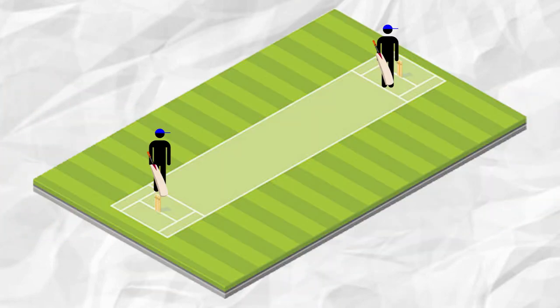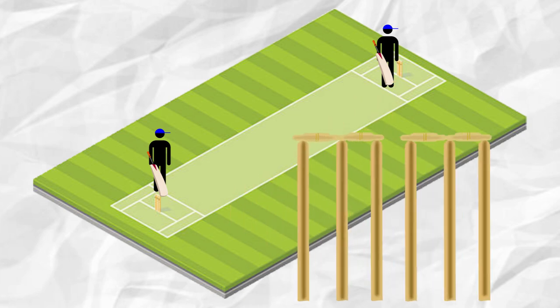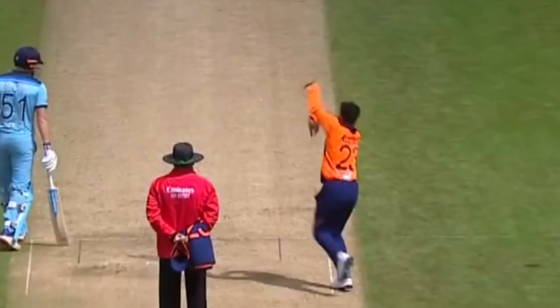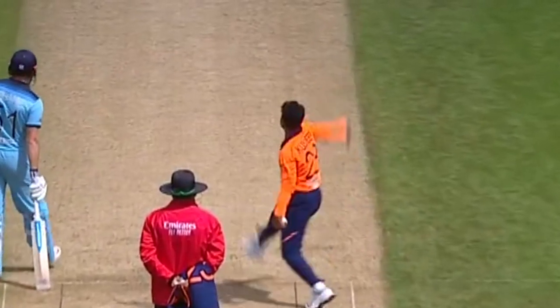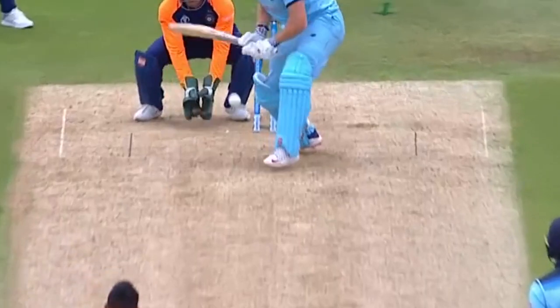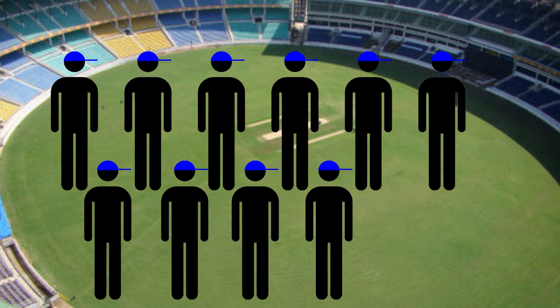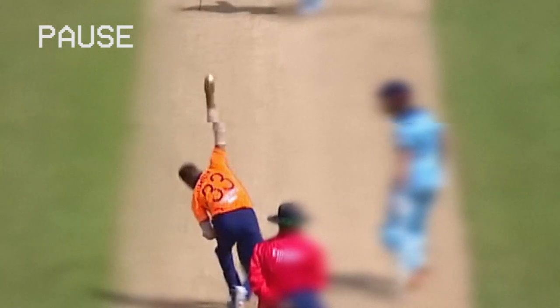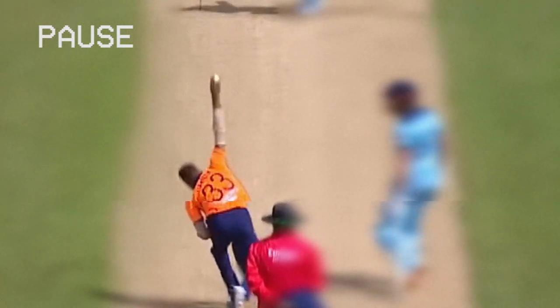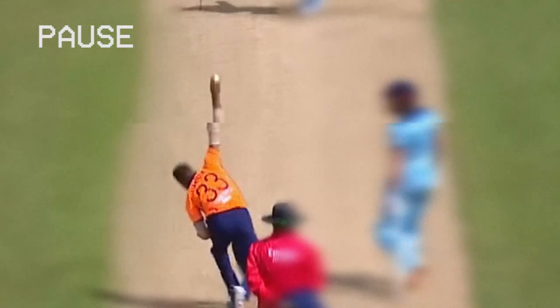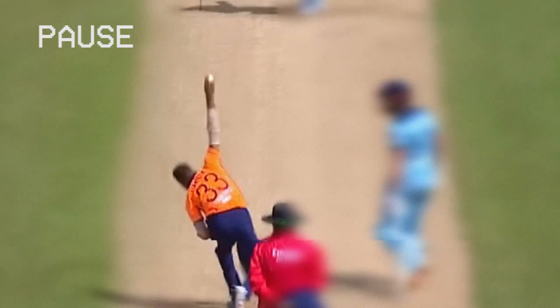Two batsmen stand opposite in front of these things called wickets. The bowler does this fancy move and throws the ball at said wickets. It's the batsman's job to hit the ball away. If it hits the wicket, the batsman is out and must be replaced by any of the remaining 10 teammates. Side note: this manoeuvre is technically impossible for the human body to naturally do, and many cricket bowlers have back problems later in life because of it.